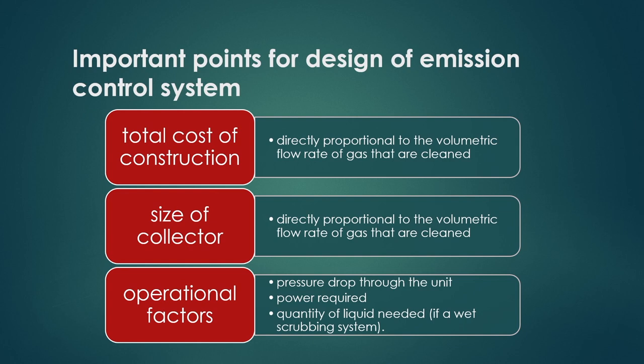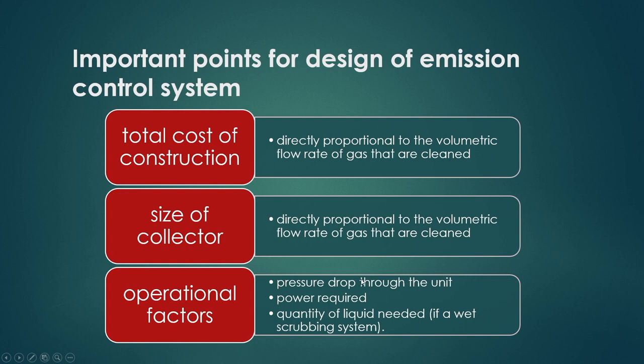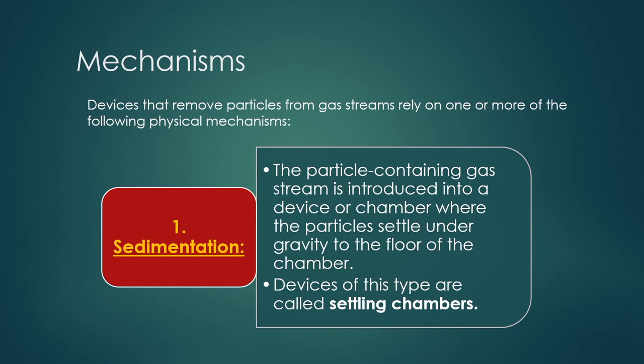These are the operational factors. The main factors affecting total cost of construction are the volumetric flow rate of the gas or liquid and the pressure drop or power consumption for that operation. All these must be considered for design of an emission control system for separation of particulate material.